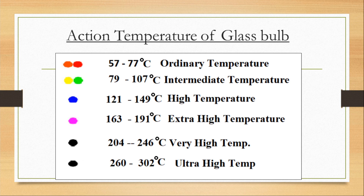Another kind of sprinkler type will have the liquid totally different, with a range between 260 up to 302 degrees. The temperature classification for this one will be ultra-high temperature.